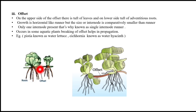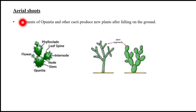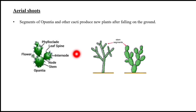Offsets occur in a few aquatic plants, and when the offset breaks, it will form a new individual. Examples are Pistia and Water Hyacinth. Aerial stems: in some cacti, portions of aerial shoots can also form a new individual.